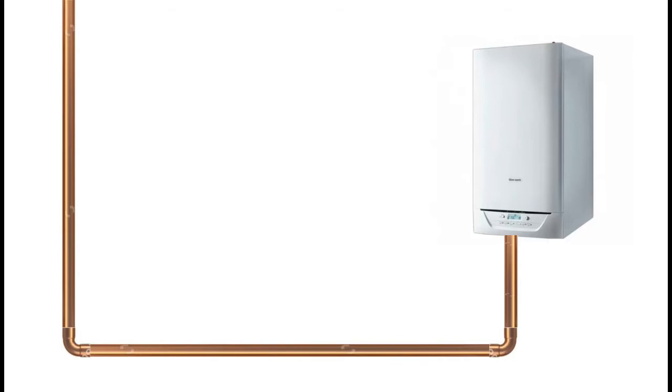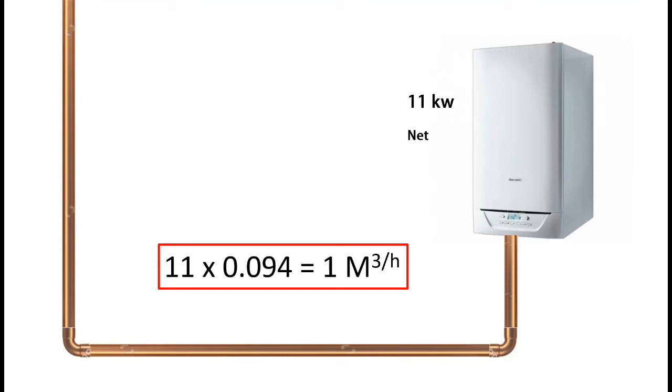This particular boiler is 11 kilowatts net. To work out meters cubed per hour when all you've got is the kilowatt rating, we simply multiply the kilowatts by 0.094. In this case, 11 times 0.094 is one meter cubed per hour.